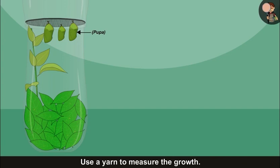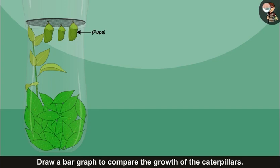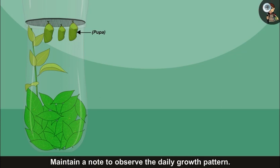Use a yarn to measure the growth. Draw a bar graph to compare the growth of the caterpillars. Maintain a note to observe the daily growth pattern.